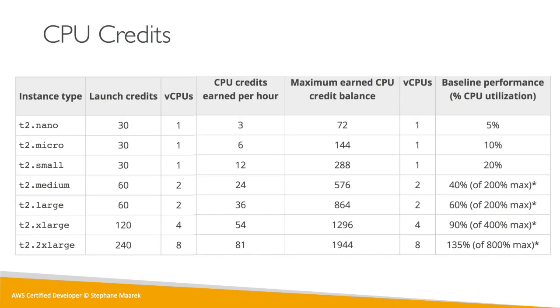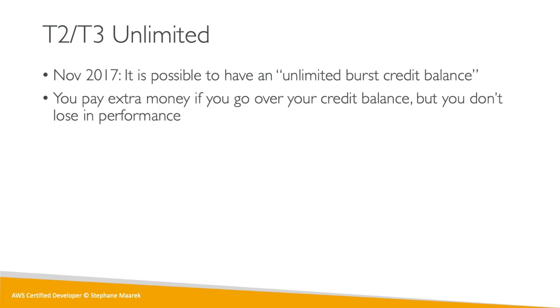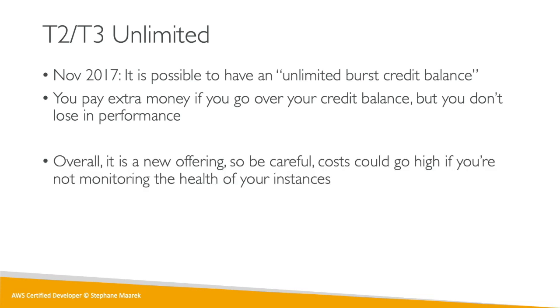CPU credits are gained at different rates depending on instance size — you can find this in the documentation. The bigger the instance, for example a T2 large, the faster you'll earn credits and the better the CPU. There is also T2/T3 Unlimited. Since November 2017, you get unlimited burst credit balance — you can burst for as long as you want, but you're going to pay for it. You need to make sure you don't burst for no reason, and it's meant for very specific use cases.